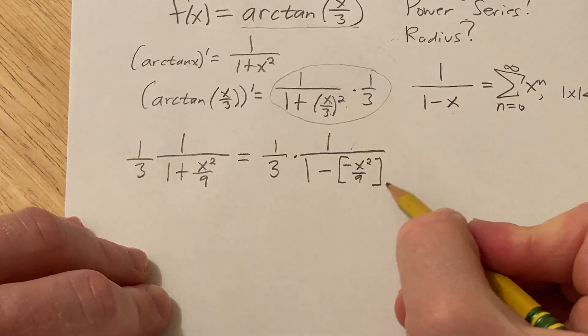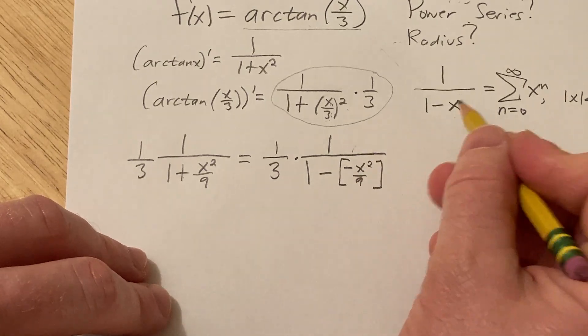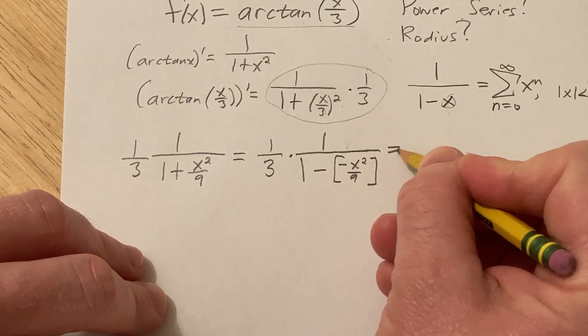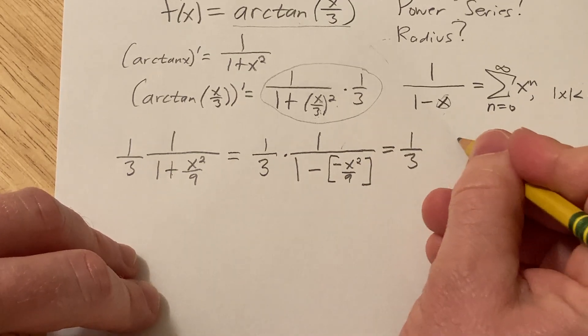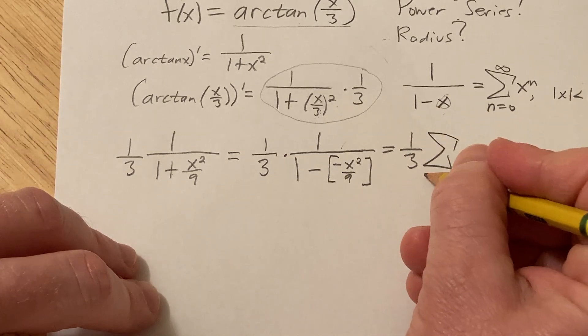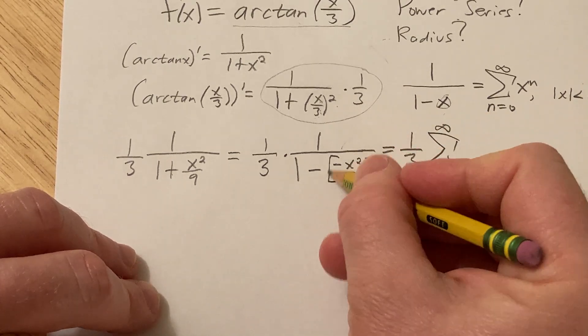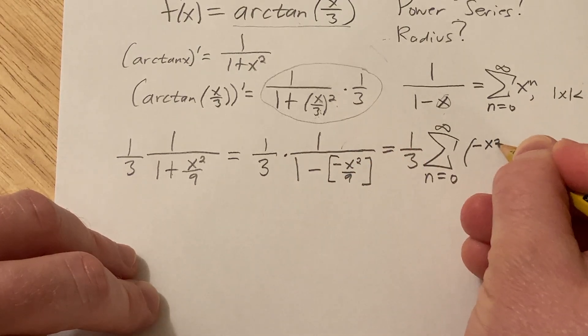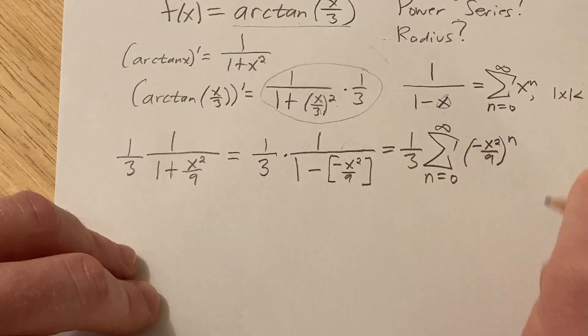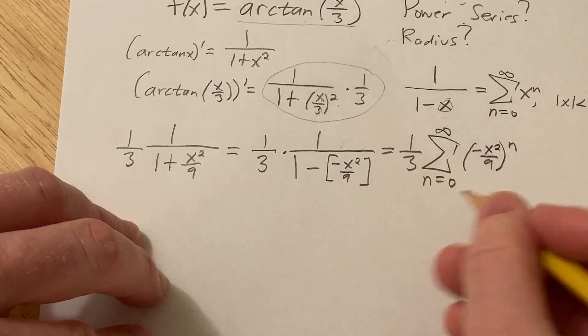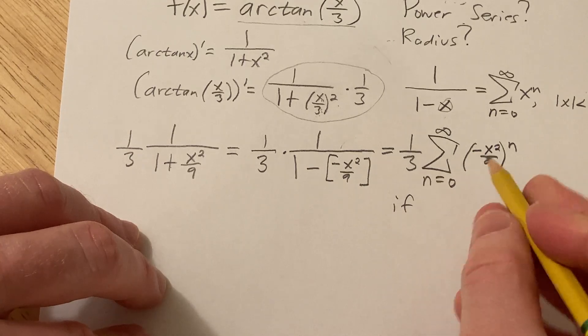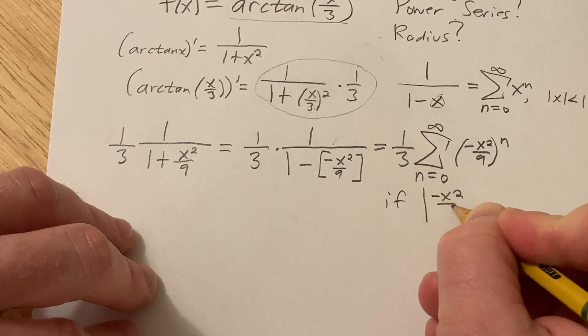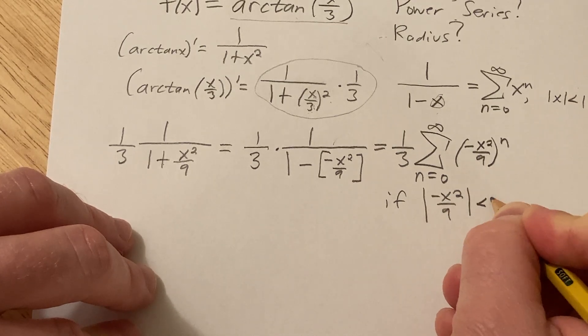So now this thing here that I have put in these super fancy brackets is just our x. And so this is going to be equal to 1 third times the infinite sum as n runs from 0 to infinity. And then it's going to be this to the nth power. So it'll be negative x squared over 9 to the nth power. Really cool, right? And this is valid if the absolute value of negative x squared over 9 is less than 1.